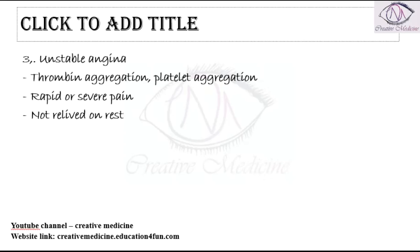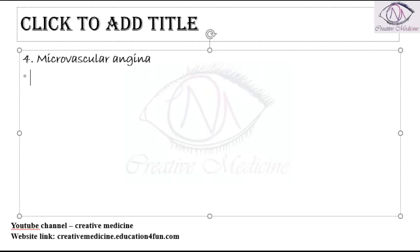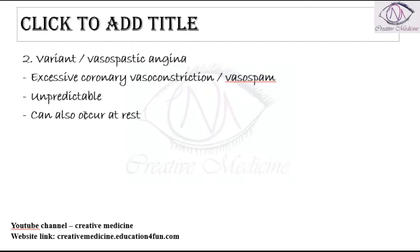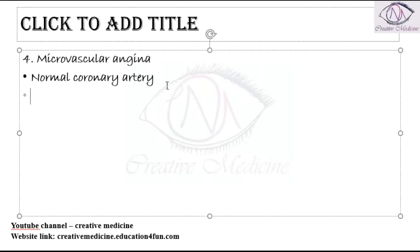The fourth type is microvascular angina. In microvascular angina, there is a normal coronary artery — there is no coronary artery spasm as seen in variant angina, where coronary artery vasoconstriction or vasospasm is present. In microvascular angina, the coronary artery is normal, but arteriolar spasm is seen.